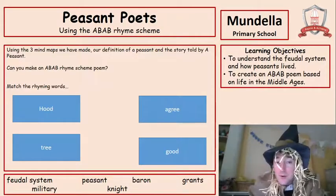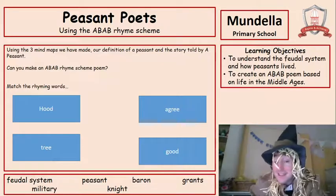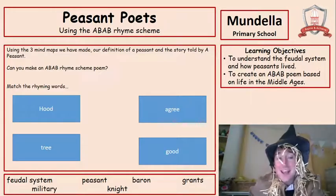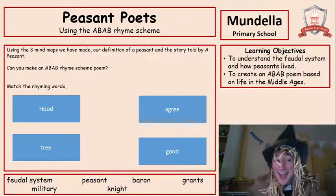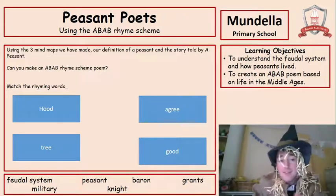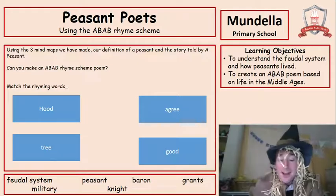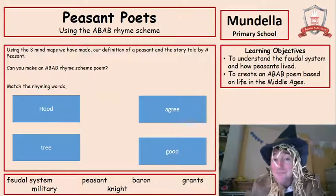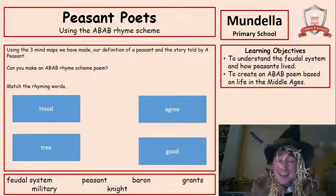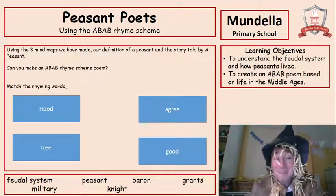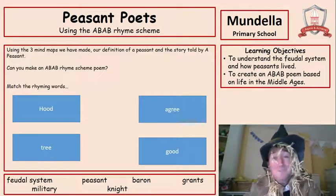So using all of those mind maps we've made, our definition of a peasant, and the story told by the peasant character, we're going to make a little poem and match the rhyming words. What is an ABAB rhyme scheme poem? I'll hand back to your teacher now — he can tell you all about it. I've been a peasant. Bye-bye, everybody!